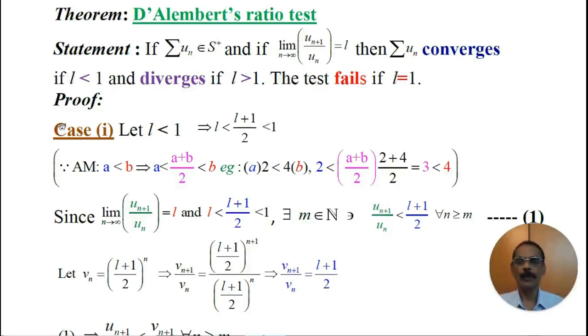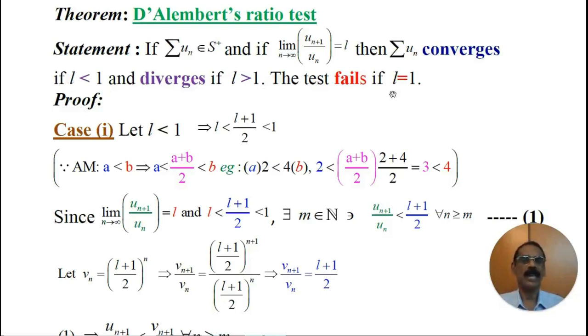The proof consists of three parts. The first is L less than 1, the second is L greater than 1, and the third case is L equals 1.